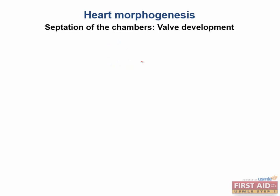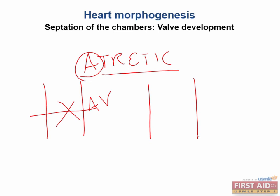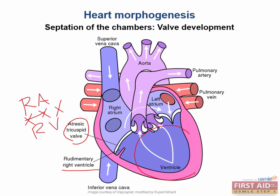What happens if the valve fails to form? If the valve fails to form from this endocardial cushion tissue, you call the valve atretic — literally, without perforation, because there is no separation of the atrioventricular canal by a valve. The one you will be responsible to know is tricuspid atresia. This poorly formed or atretic tricuspid valve did not adequately separate the right atrioventricular canal into a right atrium and right ventricle. The result is a very weak and tiny rudimentary right ventricle and a humongous left ventricle.